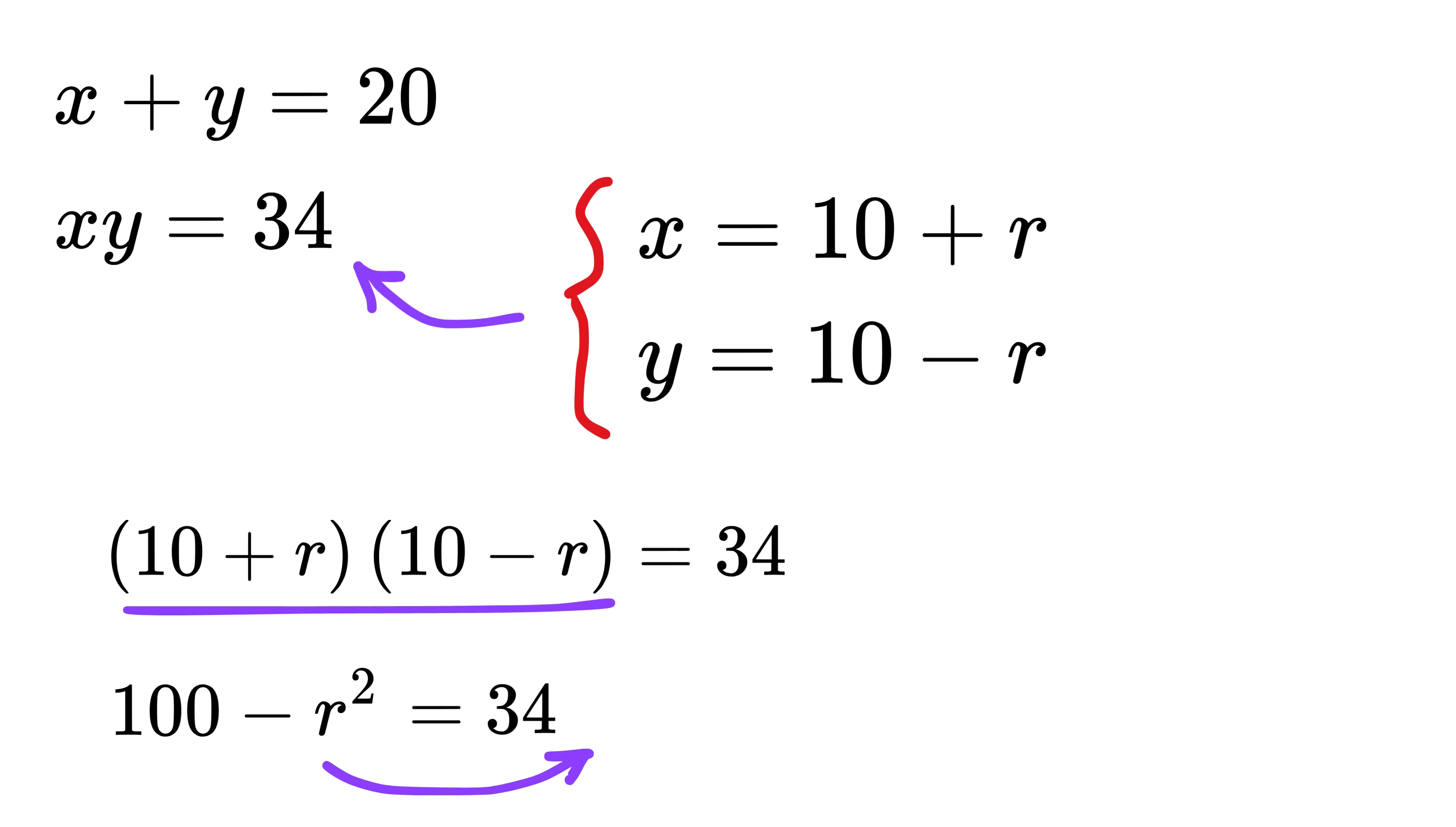Now, take r² to one side and 34 to the other to get 100 - 34 = r². This gives us 66, so r² = 66.